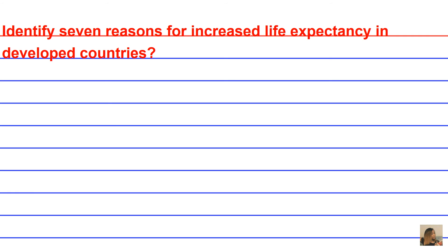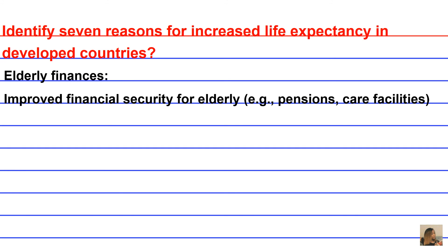A sixth reason for increased life expectancy is elderly finances. Improved financial security for the elderly in the form of pension, social security, and better care facilities. Because you need money to survive — there was a time when elderly people in the United States were living on cat food because they didn't have enough money, but we now have provisions where the elderly can have really ample finances.